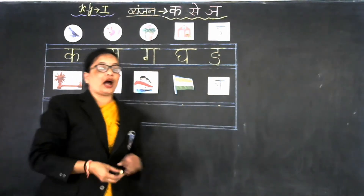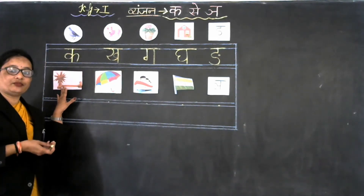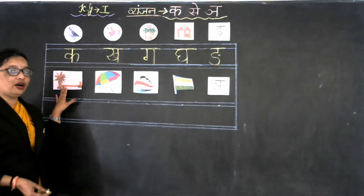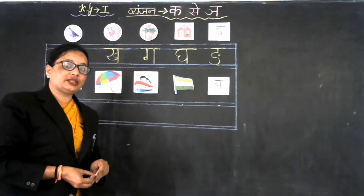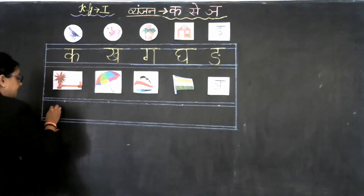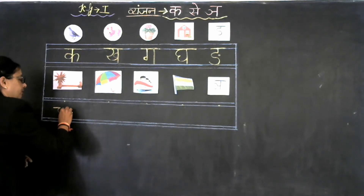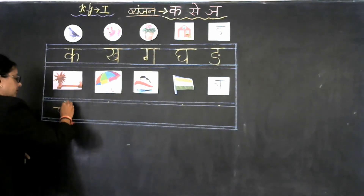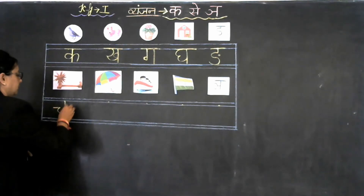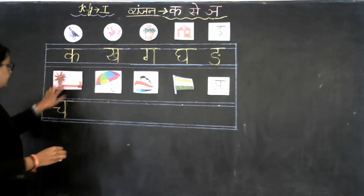Anusvara se khaali. Now our next Vyanjan is Ch. Ch se charkha, or ch se chamach. And what is the formation of Vyanjan Ch? Now look at the board. We make a sleeping line, then a small curve like this, and standing line like this, and sleeping line on the top like this.